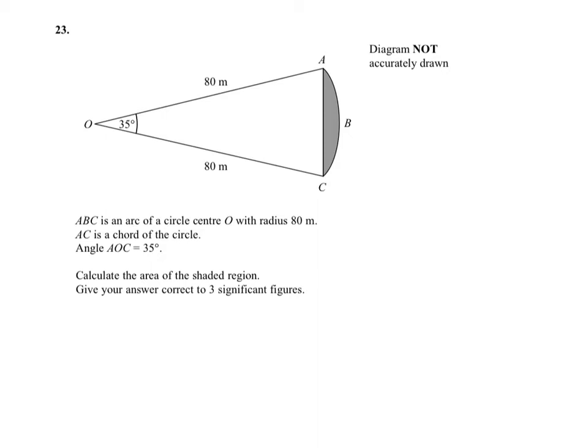So basically what we're looking at is a sector subtract a triangle. So if we find out the area of the sector and then the area of the triangle and find the difference, we'll get our answer. So we'll start with the sector.